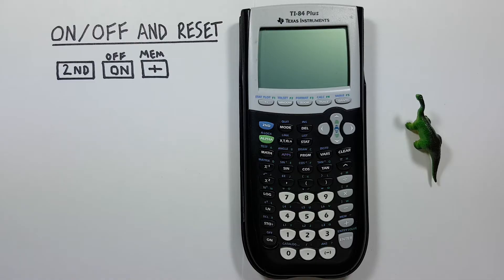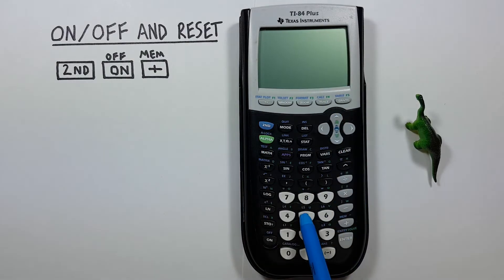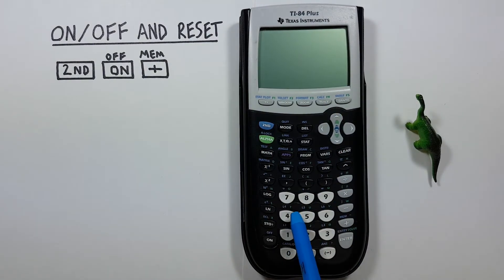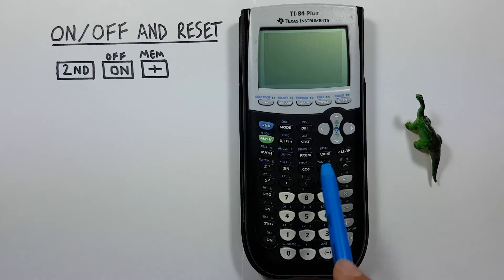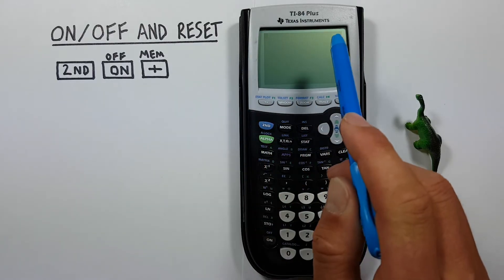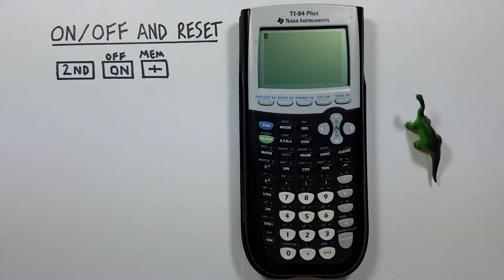To start, if we want to turn on our calculator after it's been turned off, we use the on key. You'll notice if it's off and you press most keys, your calculator won't turn on, so you need to use the on button down here in the bottom left — press that, your screen will activate, and you can work with it.